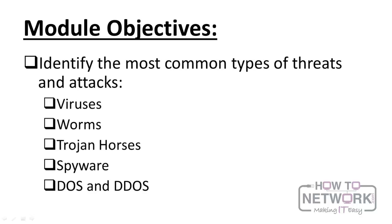The module objectives: first, we're going to identify the most common types of threats and attacks. There are viruses, worms, Trojan horses — all of which might sound like they're the same, but they're actually quite different, and we need to know what makes them different. We're also going to talk about spyware, and then denial of service attacks and DDoS attacks, which is a type of attack — fun to know about, but not something you'll ever be doing.